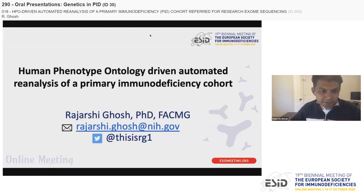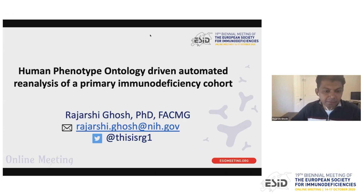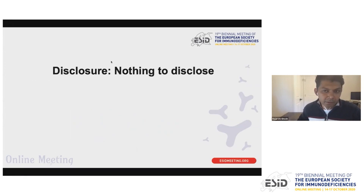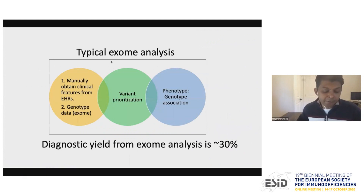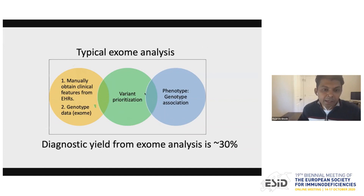I am a clinical molecular geneticist at the National Institute of Allergy and Infectious Diseases, and today I'll be talking about exome reanalysis using human phenotype ontology and our attempts to automate such a process. I have nothing to disclose. In a typical exome reanalysis, we manually obtain clinical features from electronic health records, obtain exome genotype data, do variant prioritization, and attempt a phenotype-genotype correlation to achieve a molecular diagnosis.